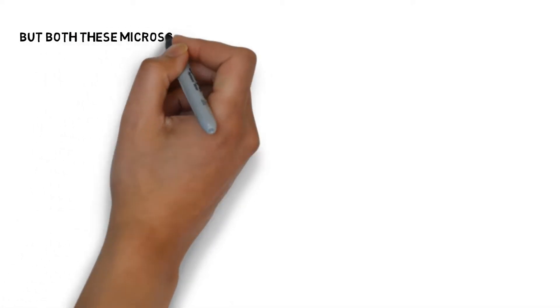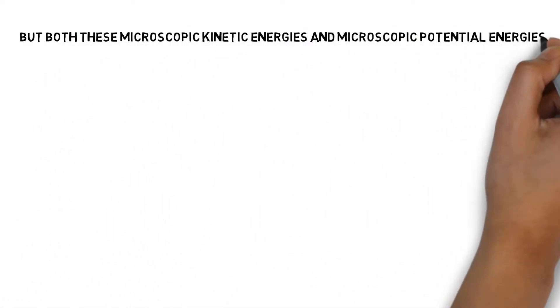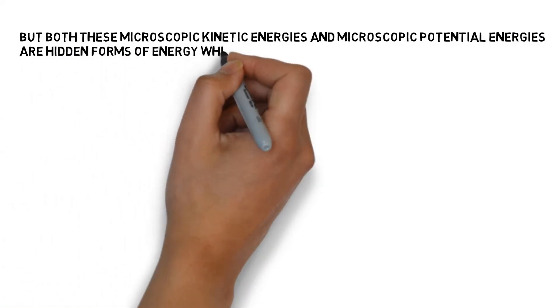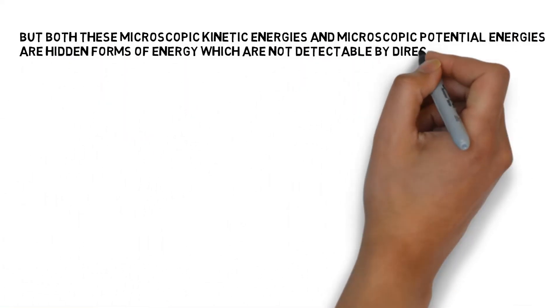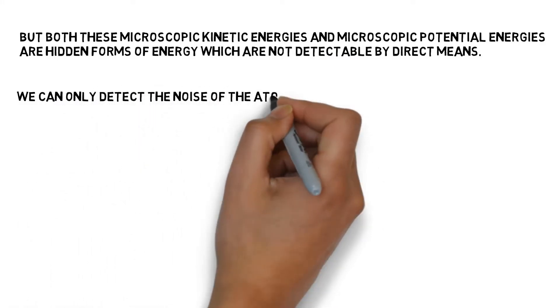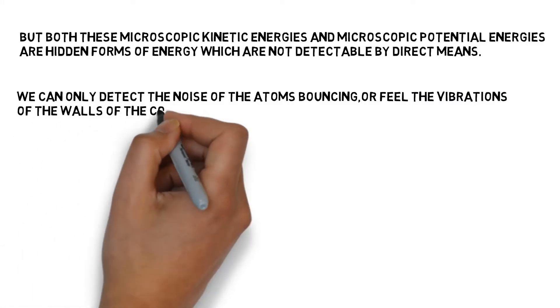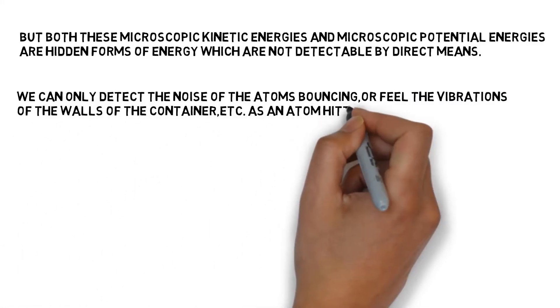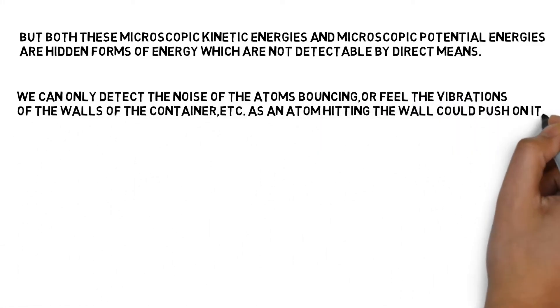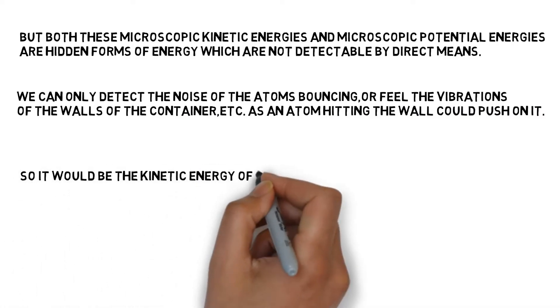But both these microscopic kinetic energies and microscopic potential energies are hidden forms of energy which are not detectable by direct means. We can only detect the noise of the atoms bouncing or feel the vibrations of the walls of the container, etc. As an atom hitting the wall could push on it, so it would be the kinetic energy of the atoms that we are detecting indirectly.